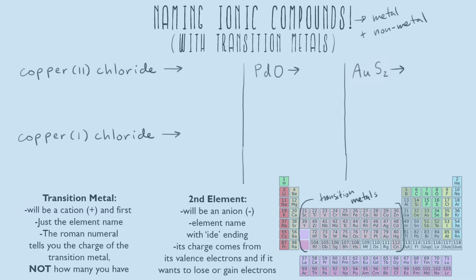The second element will always be the anion. It'll just have the element name with the -ide ending, and its charge comes from its valence electrons and whether or not it wants to lose or gain. So it's not more complicated. A lot of students forget this rule because they're blinded by the Roman numeral, so don't let that happen to you.